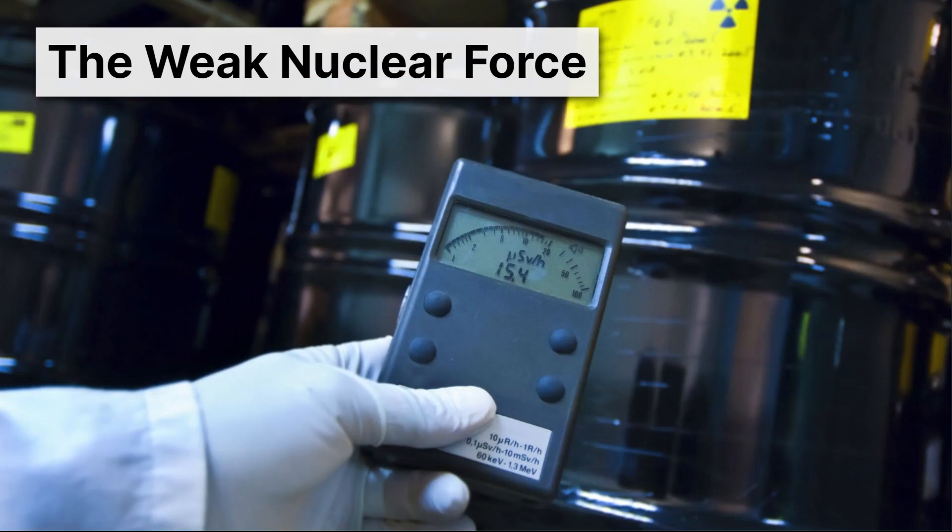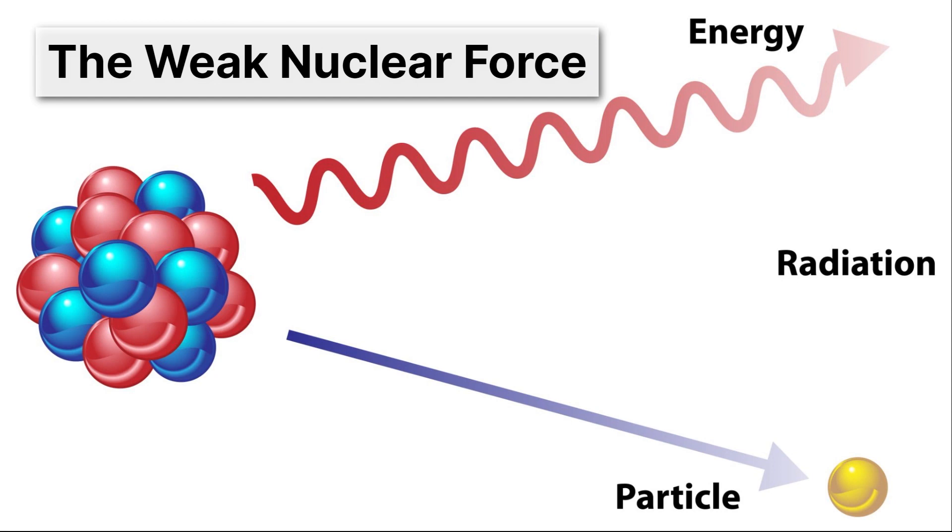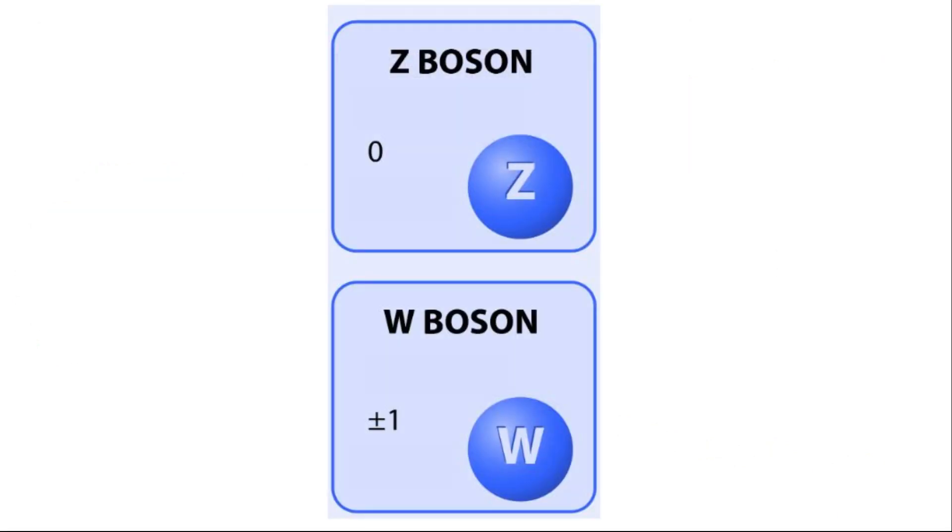Next we have the weak nuclear force. These radioactive barrels are giving off radiation because the atoms within them are decaying. This decay is in part due to the weak nuclear force. So for example, when you have a nucleus give off energy and a particle, we call this radiation, and that force has to be mediated just like the others. It turns out there are two bosons here responsible for this force, the Z boson and the W boson.